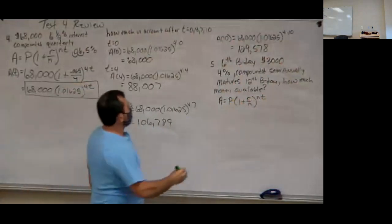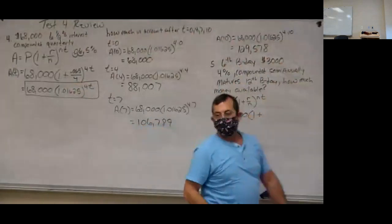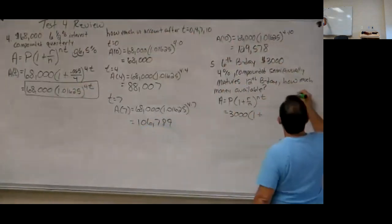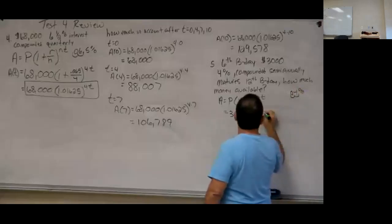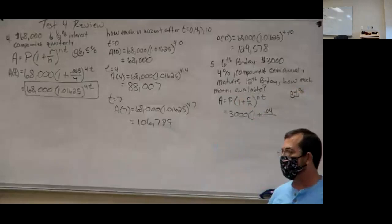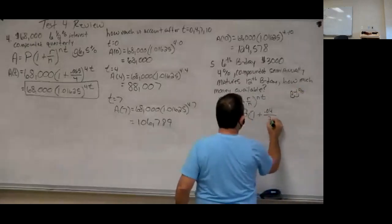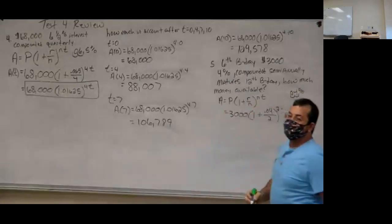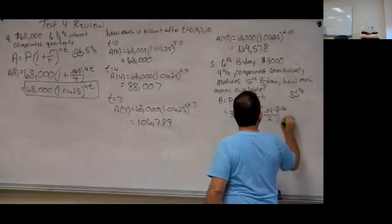We have everything we need. P is $3,000. The interest rate is 4%, which as a decimal is 0.04. Semi-annually means N equals 2 compounds per year. T is the number of years: from the 6th birthday to the 12th birthday is 12 minus 6, which is 6 years. So the exponent is 2 times 6.